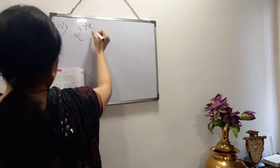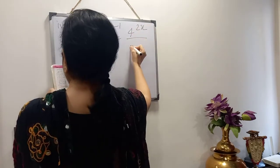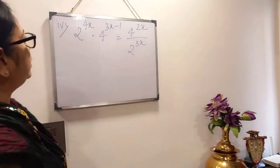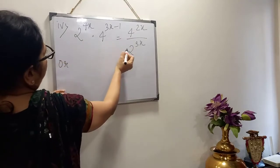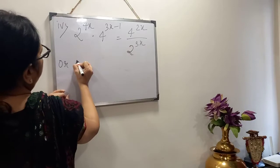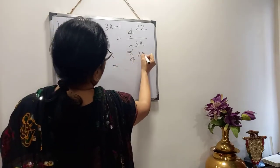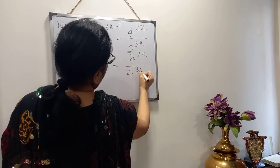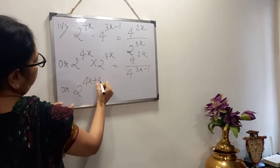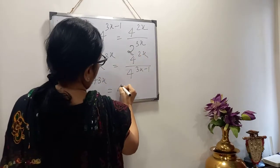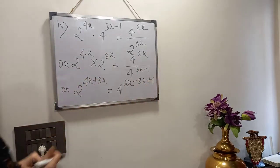Sum number 4: 2 to the power 4x into 4 to the power 3x minus 1, equals 4 to the power 2x divided by 2 to the power 3x. We see bases 2 and 4 here. We cross-multiply to bring 2 to the power 3x to the left side with 2 to the power 4x. On the right hand side 4 to the power 2x remains. Since this is multiplication, powers are added on the left. On the right, this becomes division so powers are subtracted, giving minus 3x, and minus minus gives plus 1.